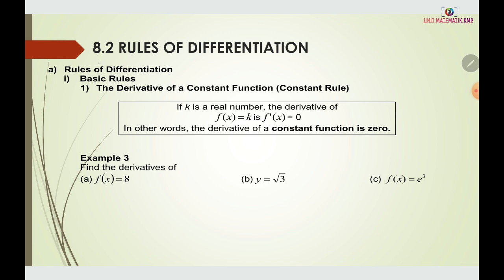We are going to learn 8.2 Rules of Differentiation — the basic rules. Rule one is the constant rule: if k is a real number, the derivative of f(x) = k is f'(x) = 0. In other words, the derivative of a constant function is zero. If any function is just a number, when we differentiate it, it becomes zero.